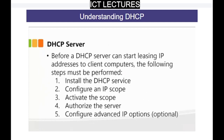Before the DHCP server can start leasing IP addresses to client computers, the following steps must be performed: install the DHCP service on the server, configure the IP scope or the range of IP addresses, activate the scope, authorize the server, and then configure other options if required.